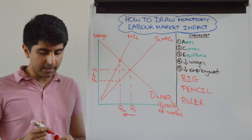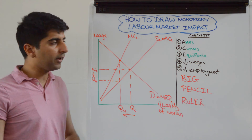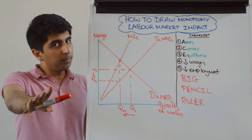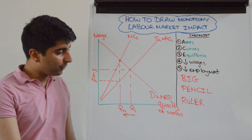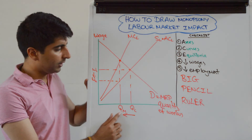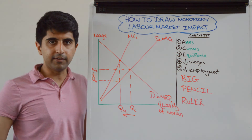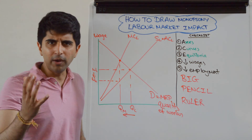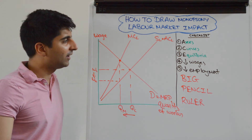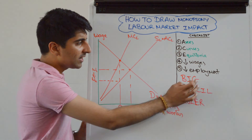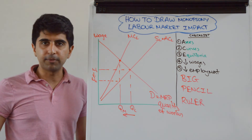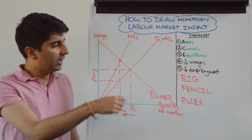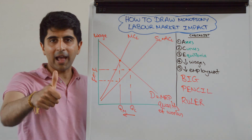Now move to our checklist for an A-star diagram: have we labeled our axes? Yes. Have we labeled all of our curves? Beautiful. Have we labeled our equilibria? Yes. Have we compared our monopsonist equilibrium to our competitive equilibrium? Beautifully. And we haven't made the rookie mistake of reading the wage from the wrong place — we know what we're doing. Have we shown crucially the lower wages and lower employment that a monopsonist brings? Yes, of course. You would have drawn it big in pencil and with a ruler as well — nailed it, smashed it.